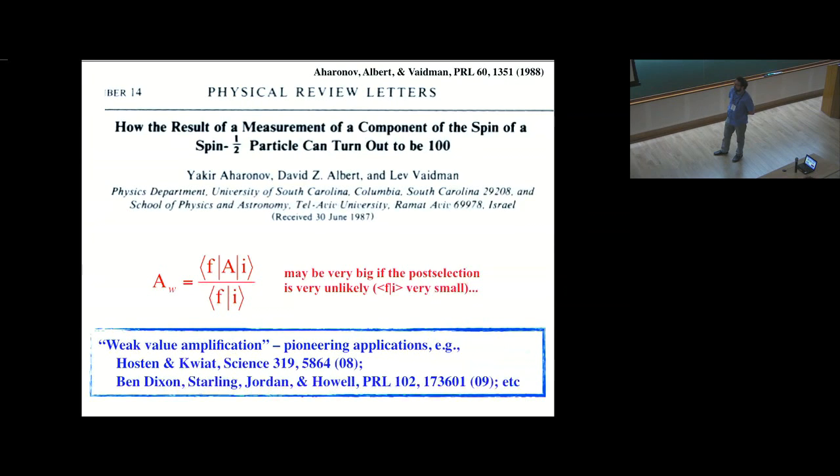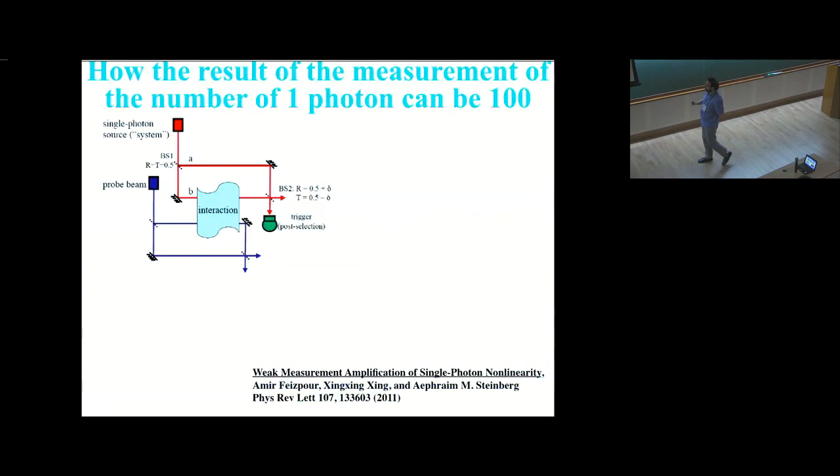There's never any individual event where you say that spin had S_z equal to 100 because all you can measure in weak measurements is an average. The uncertainty in each individual measurement is too large. What you find, however, is that the peak shifts by something that corresponds to 100. So it was suggested that this might be a way to amplify small effects, do the right post-selection and get a much larger shift on the pointer. This was done early on by Onur Hosten and Paul Kwiat who measured the spin Hall effect for light for the first time by using this, and then more quantitatively by John Howell's group who really investigated the signal-to-noise issue. But I want to show you how the result of the measurement of the number of one photon can be a thousand.